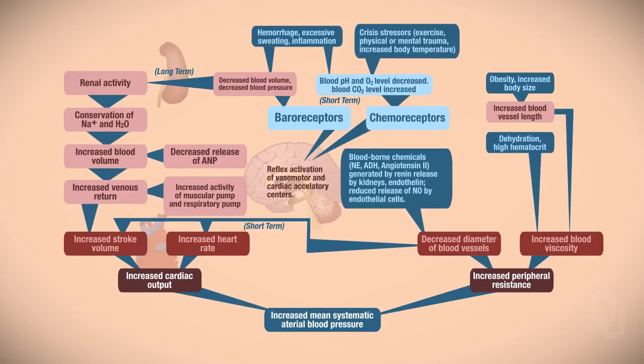Here is a summary of the factors that actually increase MAP — a nice summary that also includes chemoreceptors, which we discussed in reference to respiration. This is not an all-inclusive summary; it gives you an idea and is a good way to start putting together all the factors that increase MAP, though there are certainly things you can add to make it more complete. This concludes the video on long-term regulation of mean arterial pressure.